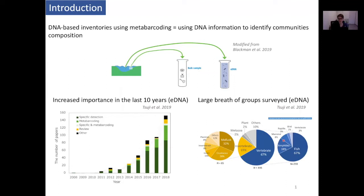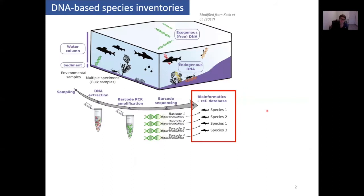DNA-based inventories using metabarcoding use DNA information to identify community composition. It could be from bulk samples where we take the individuals themselves, mix them up, and then retrieve the species present by using their DNA. Or it could also be from eDNA, where we sample directly the environment without the individuals themselves and identify the species present from DNA traces in the environment. We've seen an increased importance in the last 10 years. For eDNA, the number of papers published is getting higher every year. There's a large breadth of groups that can be surveyed. Most are vertebrates and among them, most are fish.